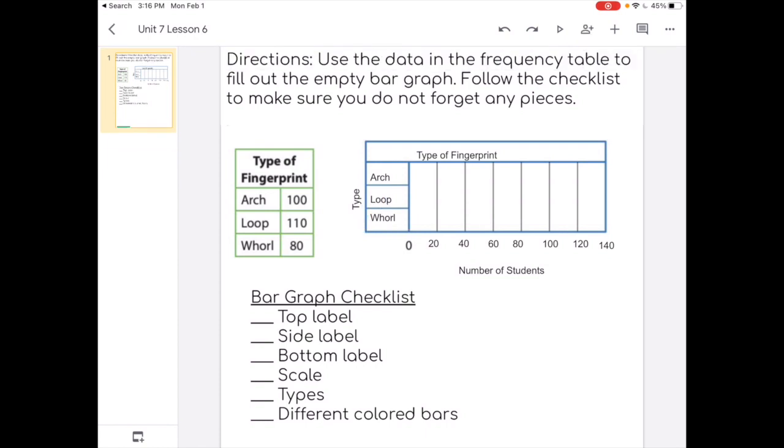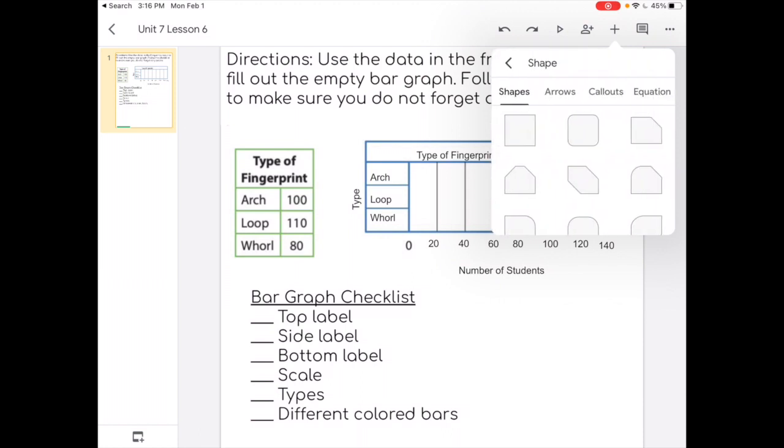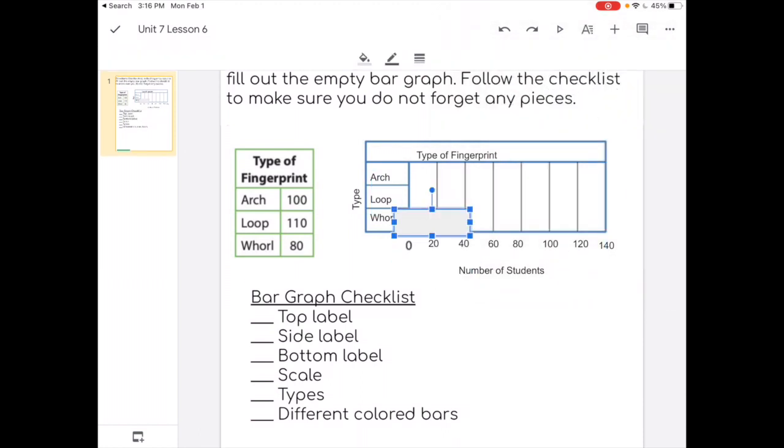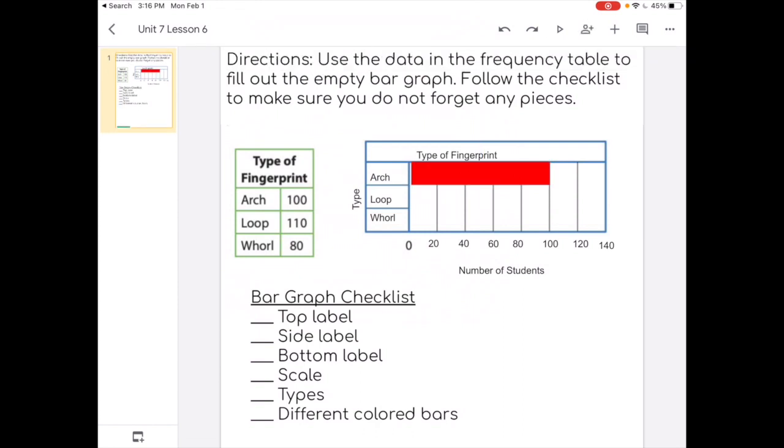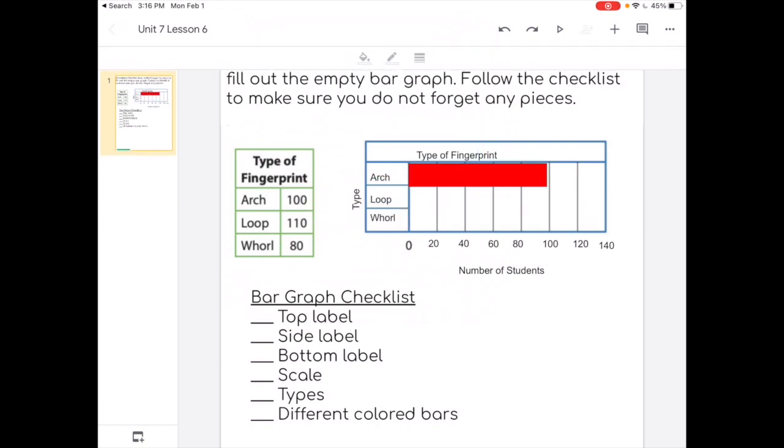Okay, and the very last thing on the bar graph checklist is the different colored bars. So to do that, we're going to add a shape. It comes out as a square, but we're going to make it into a rectangle. So let's start with arch. The frequency table says the arch goes to 100. So I'm going to take mine to the 100 grid line. And our checklist says that the bars need to be different colors. So I'm going to do red for the first one. Make sure it starts at zero. See how it was a little off. There you go.